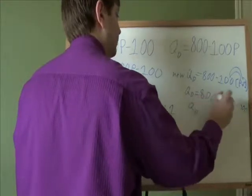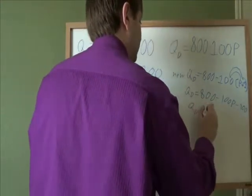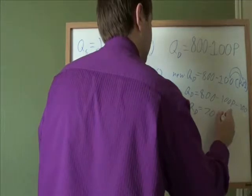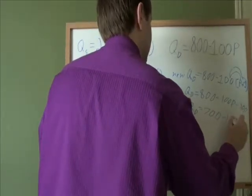So we have positive 800 and negative 100. Together, that is positive 700. The 100p stays how it is.